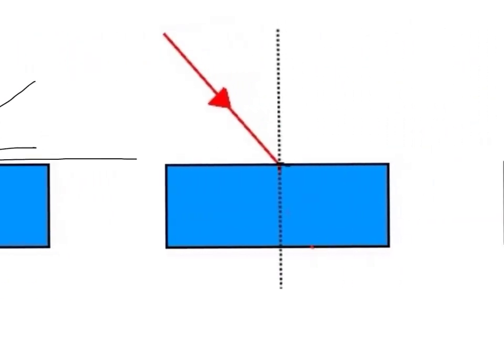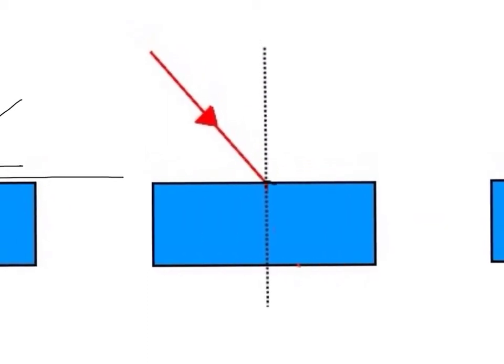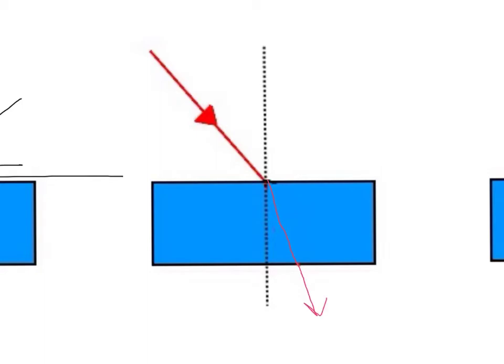If light enters a block of glass at an angle, the light slows down a bit and bends back towards this normal line. This bending back of the light towards the normal line is called refraction.